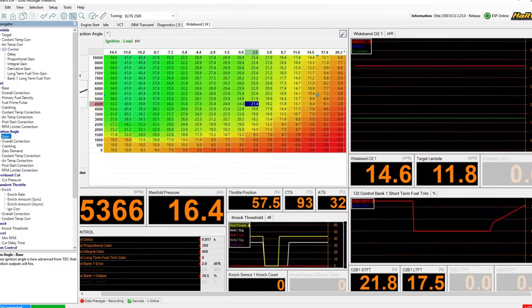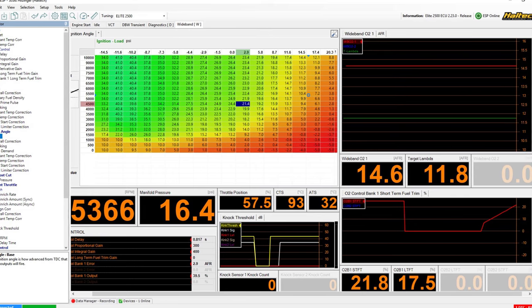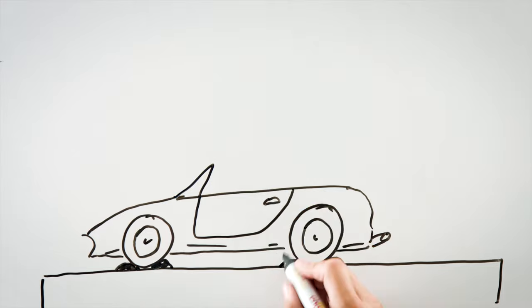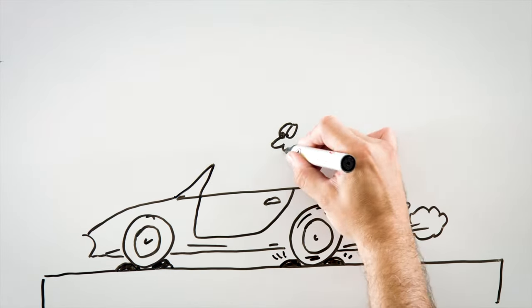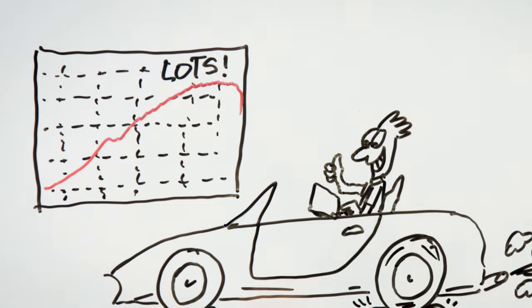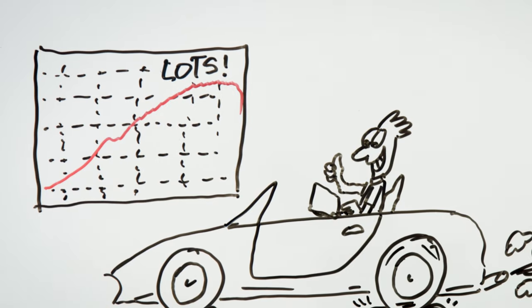Haltech supplies base maps, which are a huge range of these lookup tables that are already pre-configured for a lot of different styles of engines and racing types. We can start an engine on one of these base maps, but then it's up to the tuner to tune all of these tables in order to make the most out of your particular engine in your particular application and area.